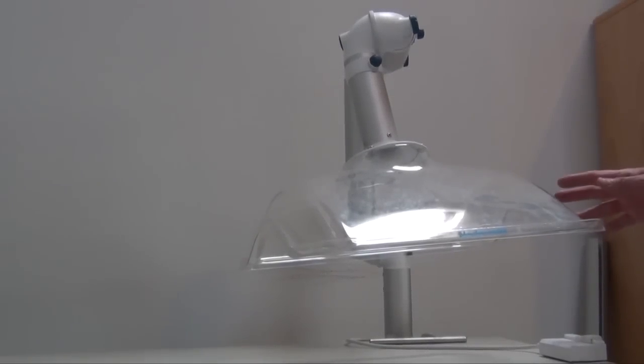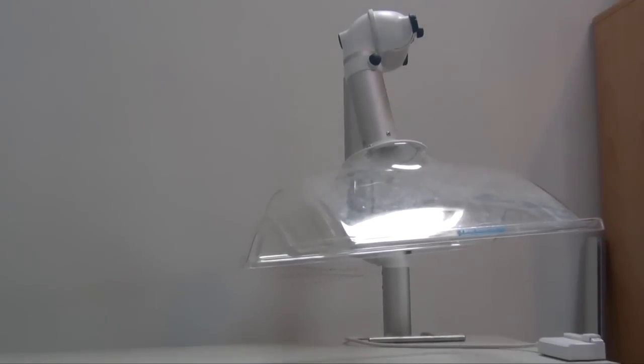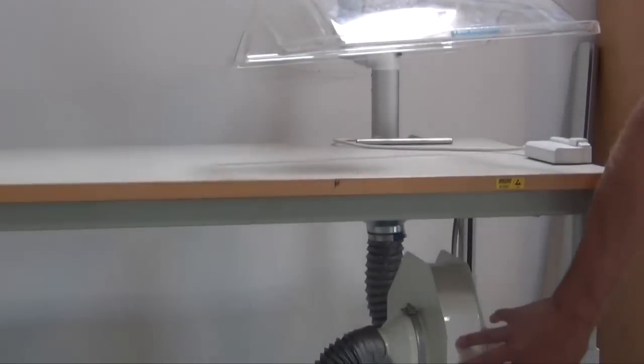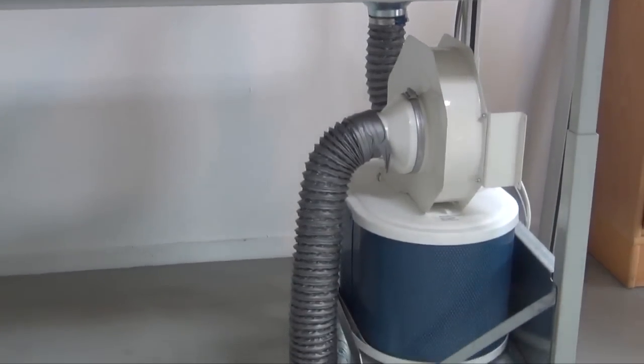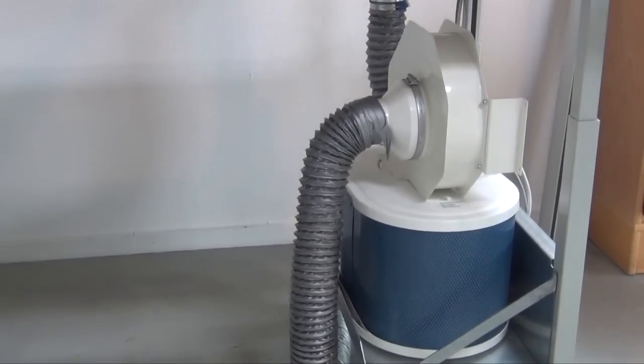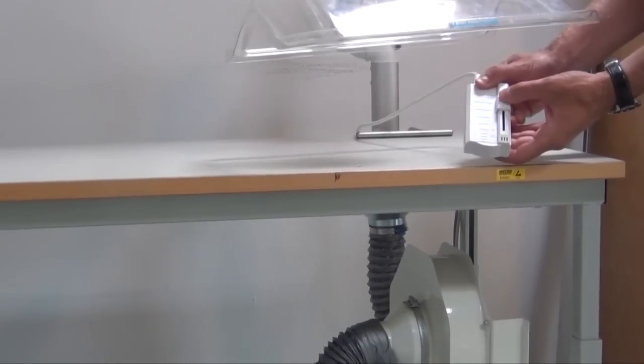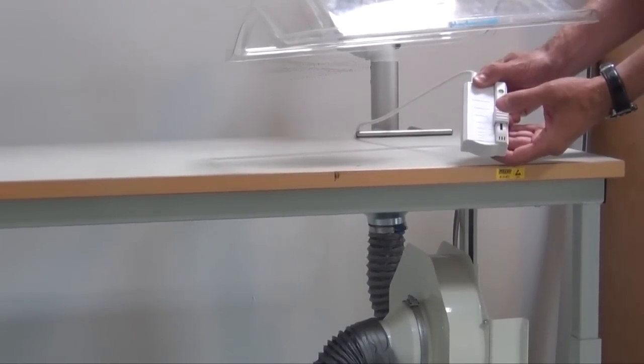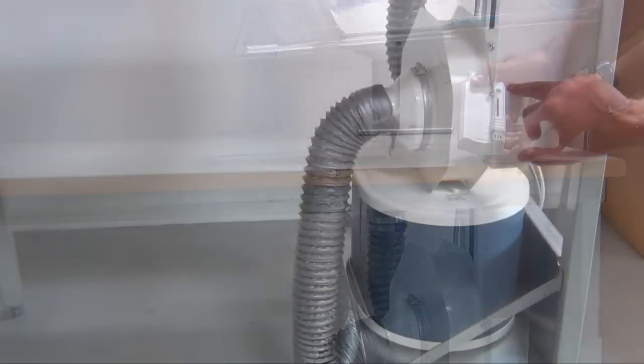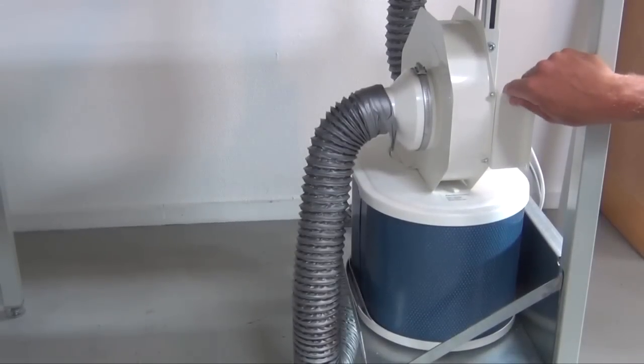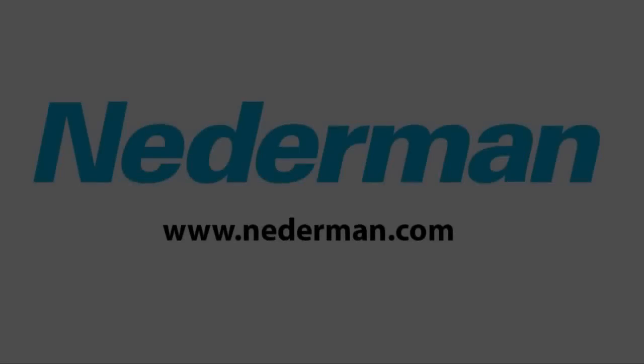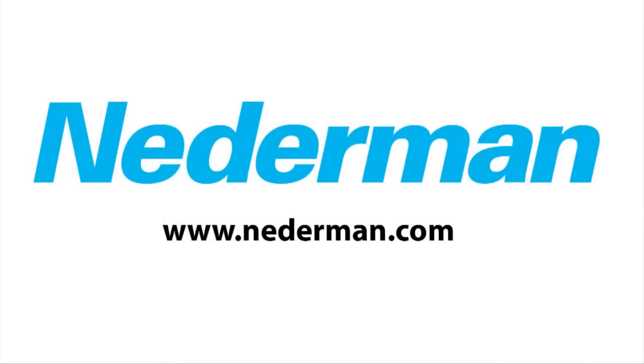If you want just to install one fan per one arm you can have a Nederman N3 fan with an integrated filter. Here you can easily adjust the fan speed with the enclosed device. So this is the N3 fan that can serve either three 32mm arms, two 50mm arms or one 75mm arm.